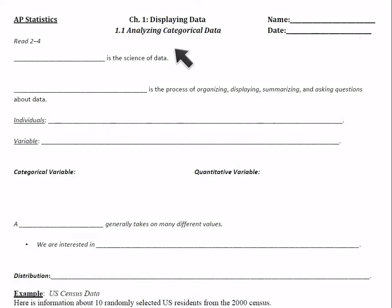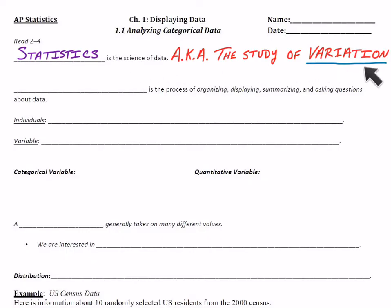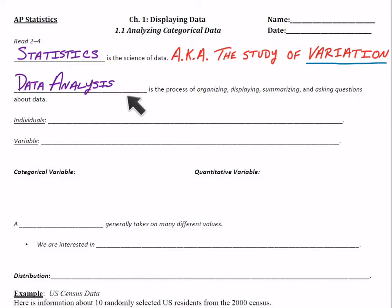1.1 analyzing categorical data. Let's start with the first blank — it's statistics. Statistics is the science of data, all different types of data that we'll look at. Another phrase I like to use is statistics being the study of variation — change or differences in numbers. Data analysis is the process of organizing, displaying, summarizing, and asking questions about data.